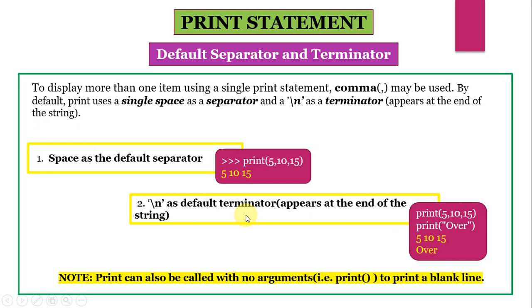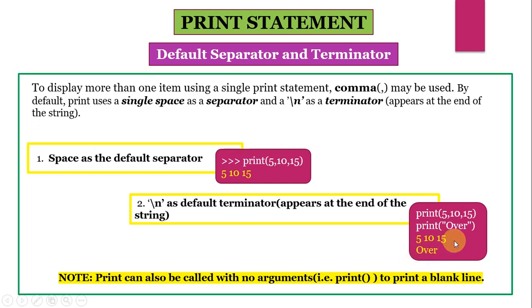Now \n as default terminator. If I give two print statements together in a Python script — print 5, 10, 15 and then the next print statement print 'over' — you can see for the first print statement the output is 5, 10, 15 with all three numbers separated by space. The output of the next print statement, 'over', is coming on the next line, not on the same line. This is because \n is the default terminator. After every print statement, your cursor comes to the next line automatically.